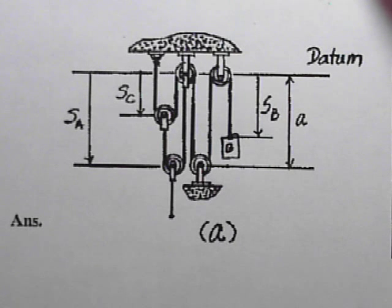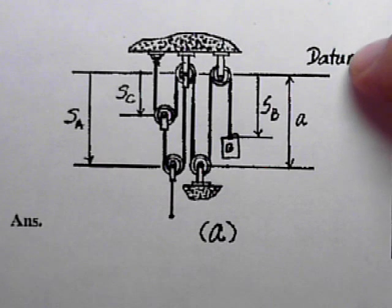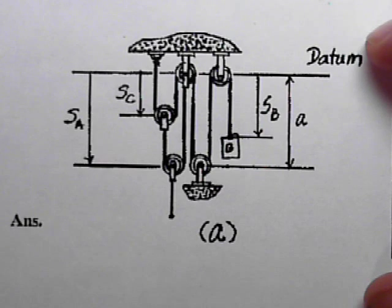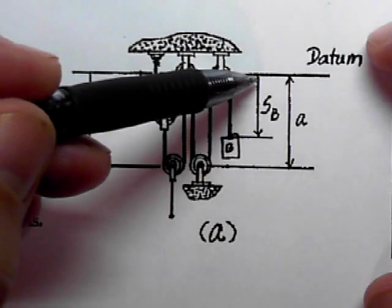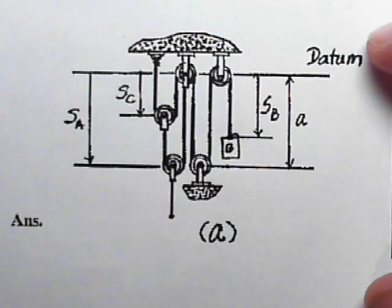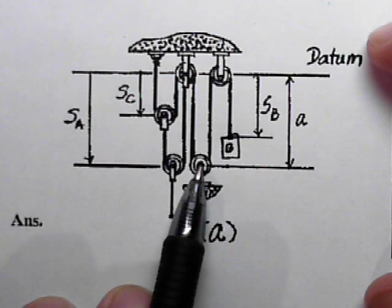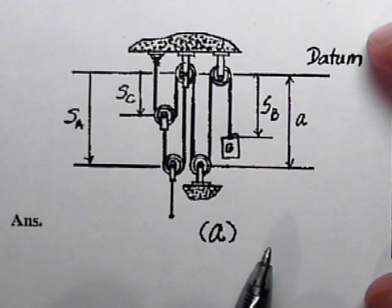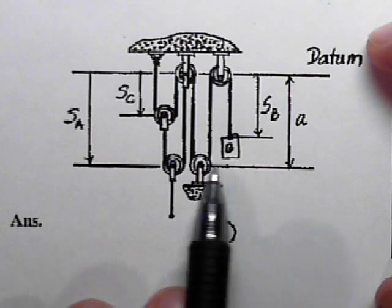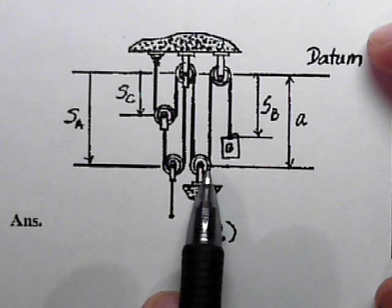Now, first of all, let's locate, using our datums, all of the moving things. So here is our distance from the datum to block B. We do have a lower stationary pulley here that does need to be located relative to the datum, and so we'll measure that distance as A.